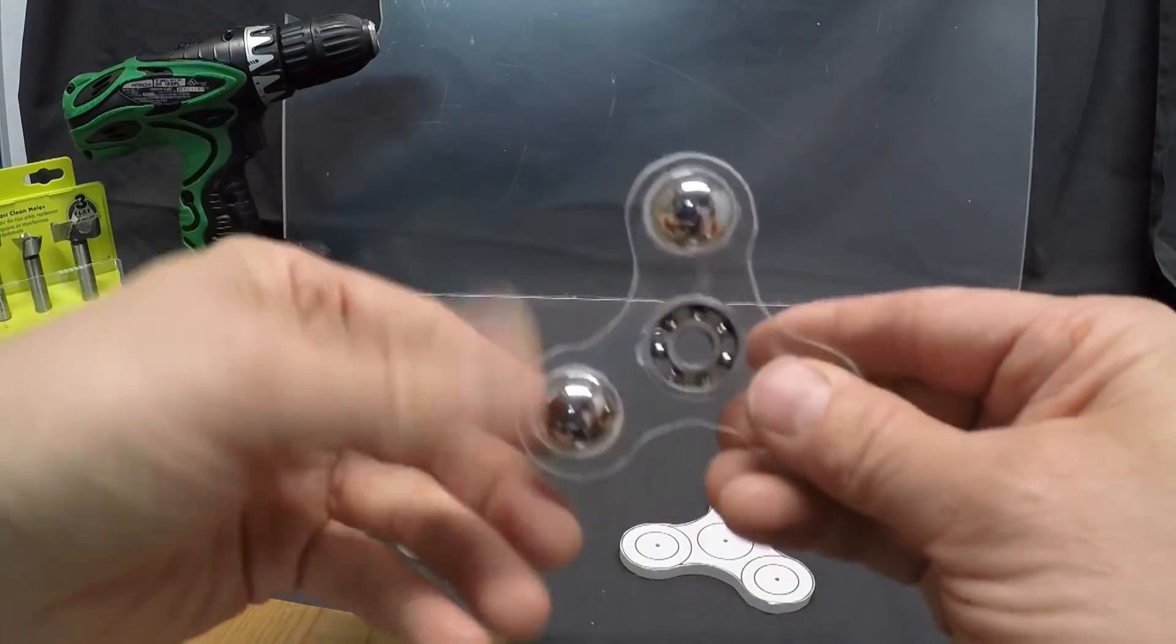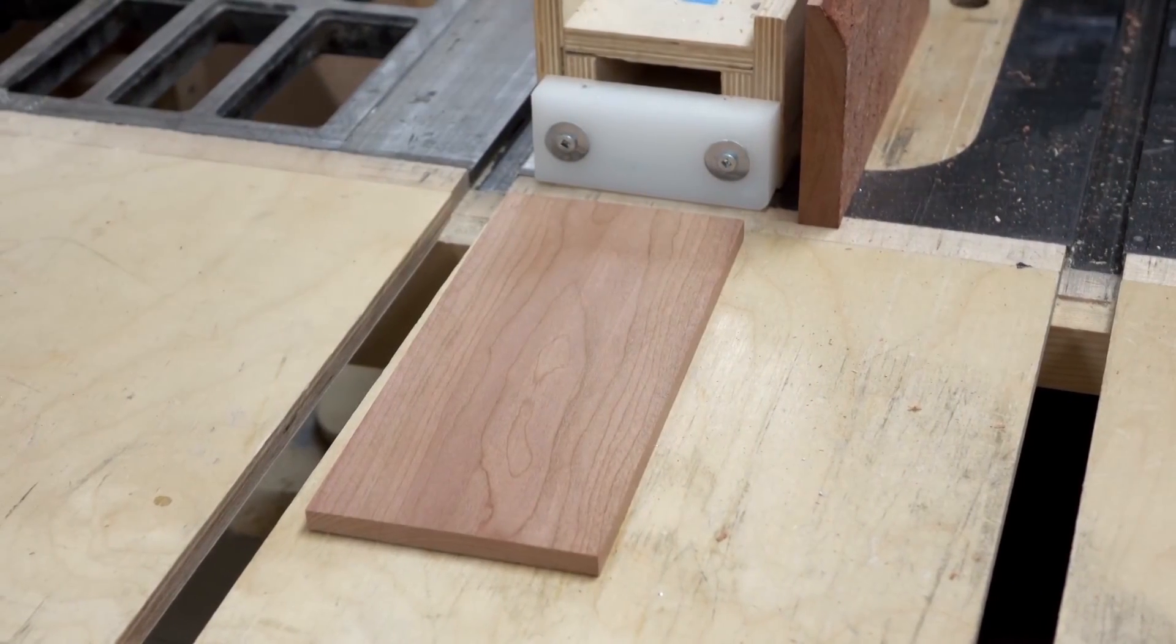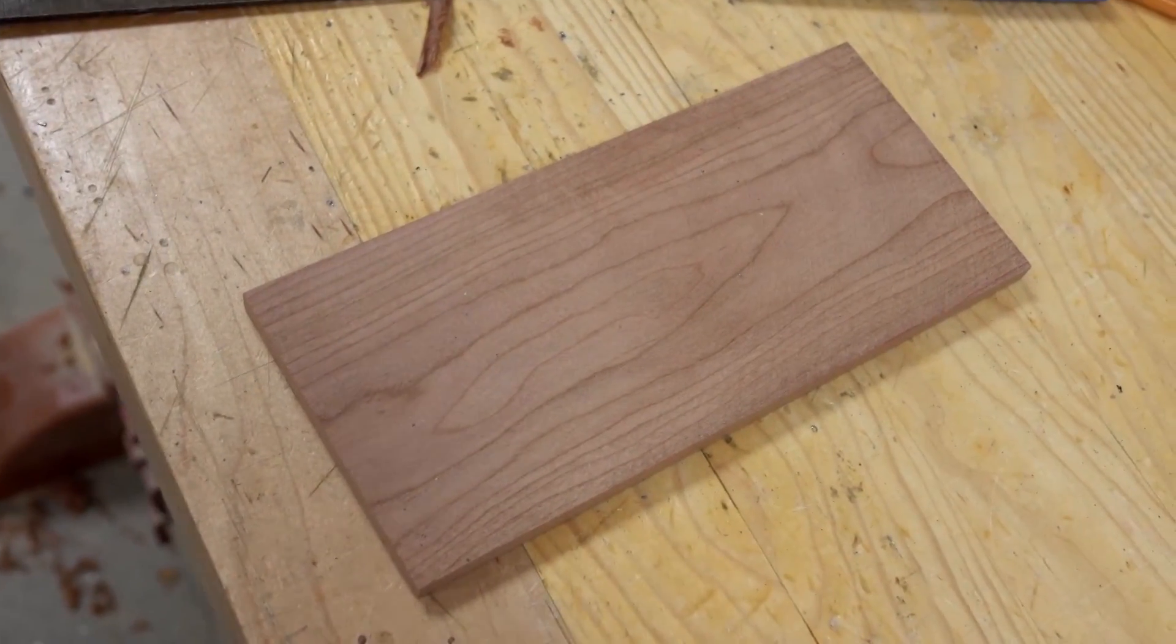As you can see, the result is perfect. Number 2. For this one, you will need a roller bearing, fine paper and a good table of around 5mm.